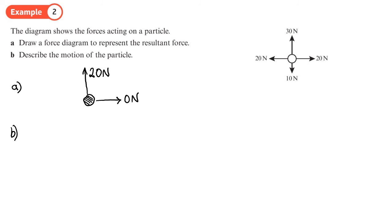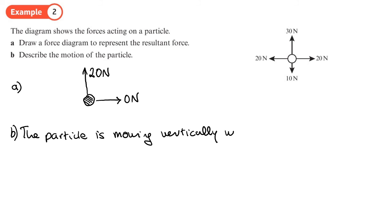Describing the motion of the particle: the particle is moving vertically upwards. You should now be able to do exercise 10A on pages 158 to 159.